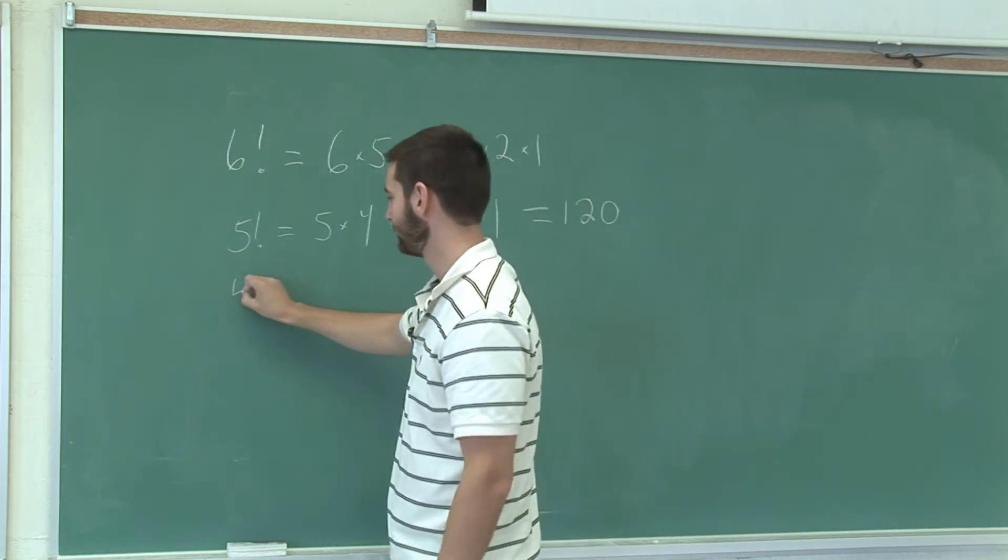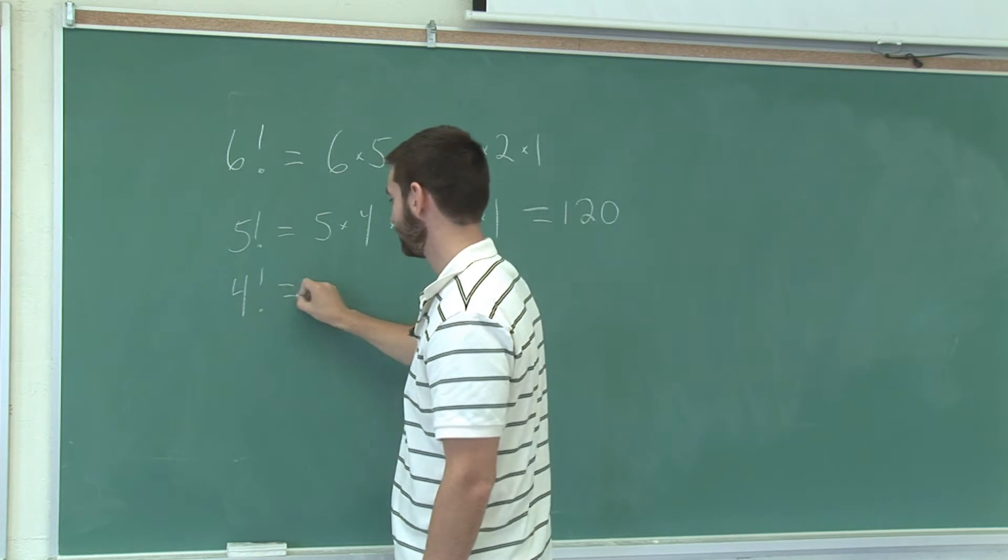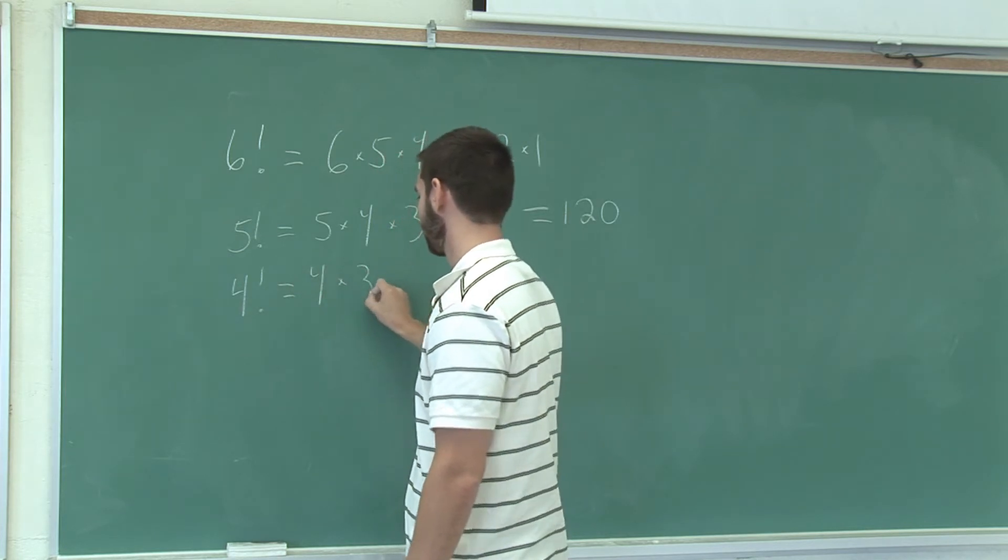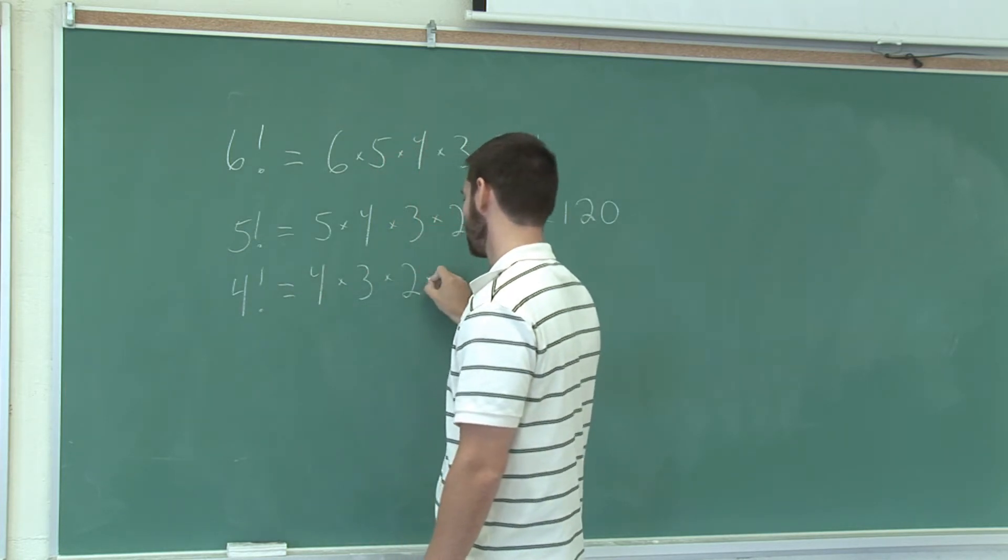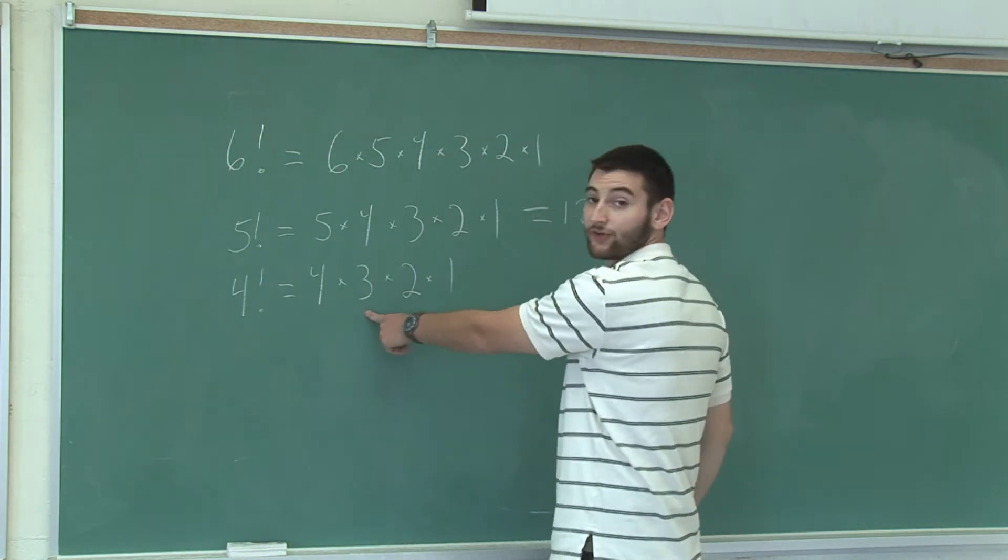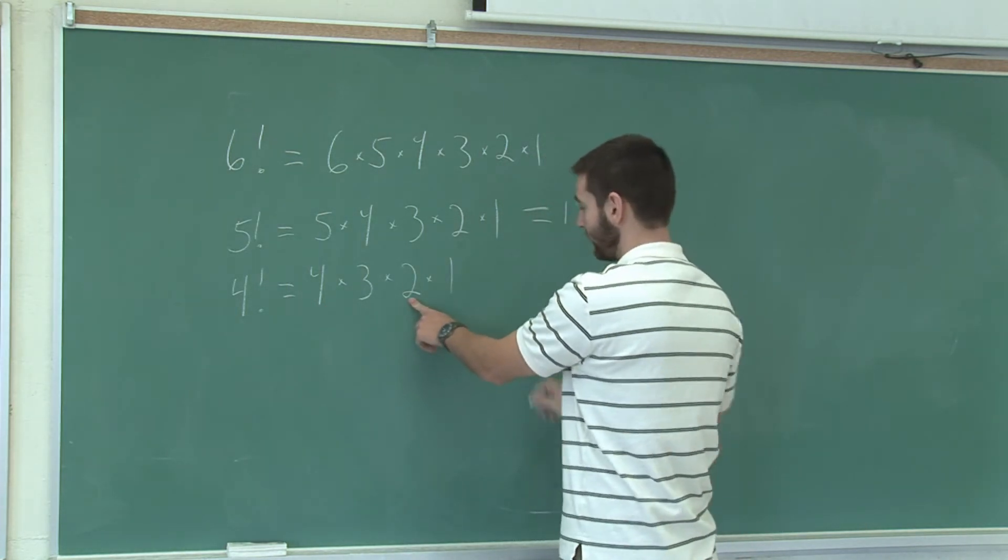4 factorial is equal to 4 times 3 times 2 times 1. 4 times 3 is 12, times 2 is 24.